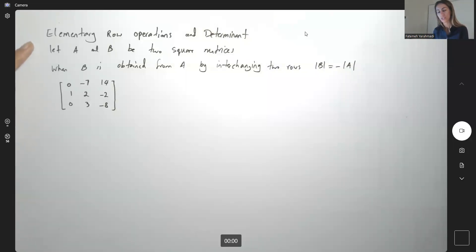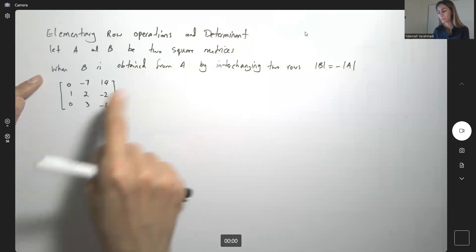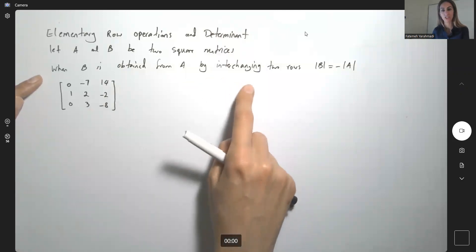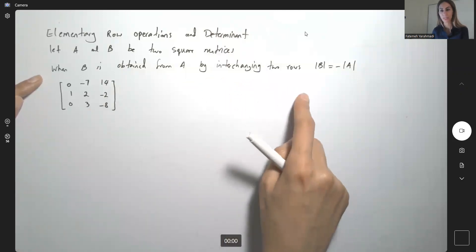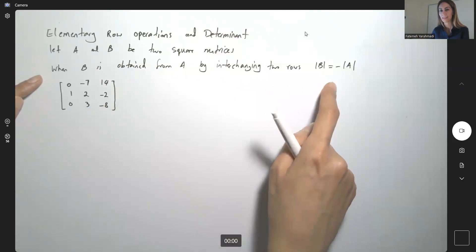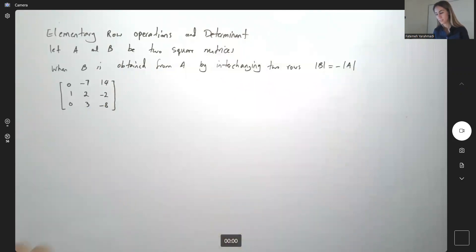Elementary row operations and their effect on the determinant. Suppose you have two square matrices. If B is obtained from A by interchanging two rows, the determinant of B is the negative of the determinant of A. Take a look.